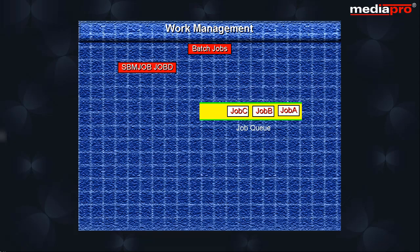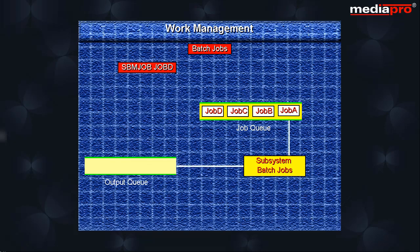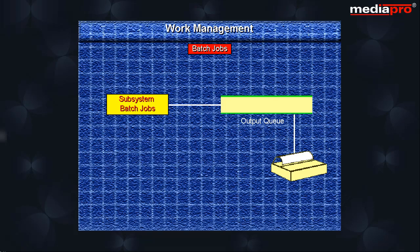A batch job is usually started by the submit job command, which causes the job to be placed on the job queue. All jobs that are waiting to run are placed on a particular job queue associated with one of the subsystems. The job waits on the job queue until other jobs ahead of it have been processed. If the job produces any printed output, it is put on the output queue until it is printed. The batch job ends once the spooled file is printed.